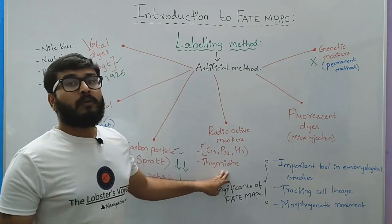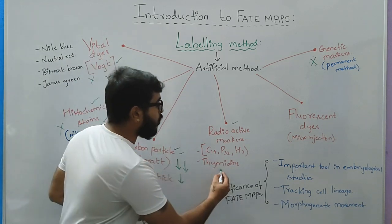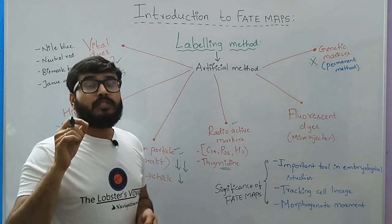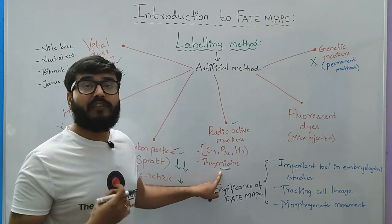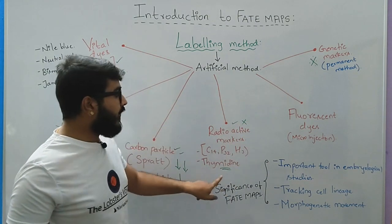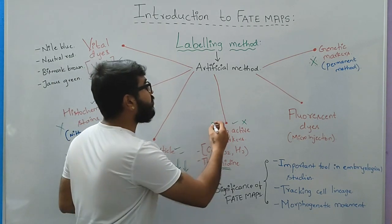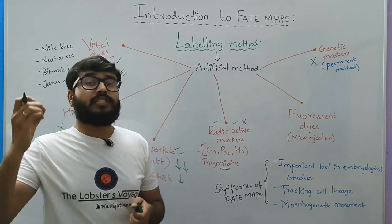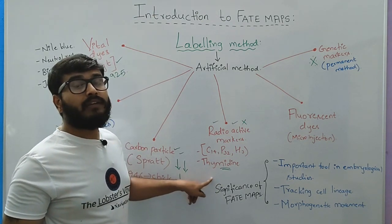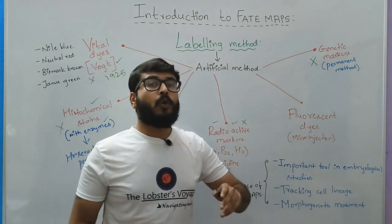The fourth technique is radioactive marking, particularly using a radioactive substance called thymidine. This is a pretty dangerous technique compared to the others, as this radioactivity could possibly induce mutations in the embryo and also dangerous effects on the person inducing it. Therefore, this technique is not preferred for constructing fate maps, yet radioactive markers are used to understand the genetic composition or genetic movement in the embryo. The radioactive substance is injected and its activity is tracked.